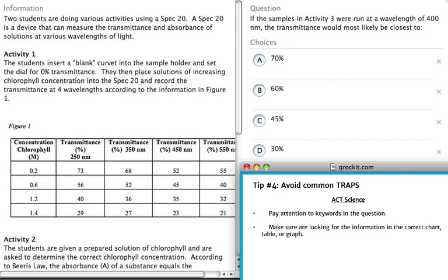We want to avoid common traps in the ACT science section, since we have to answer 40 questions in only 35 minutes. With this question from Grokett, there are actually over 1,600 questions in our ACT game engine.